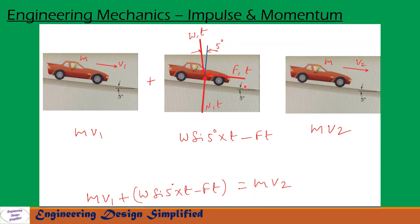So the net impulse on this car can be written as the weight component along this plane, W·sin(5°)·t, minus the braking force F·t.